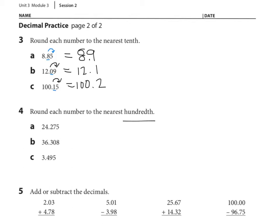Now we're rounding to the nearest hundredth. We're going to underline the hundredths place value in each number and look to the right — five or more, the number goes up by one. All of our other digits stay the same; only the hundredths place value is rounded. So, thirty-six and thirty-one hundredths. Here we have three and — be careful here. If the nine goes up by one, it becomes a ten. So what happens to the four in the tenths place value? It becomes a five. So three and forty-nine-hundredths becomes three and fifty-hundredths.